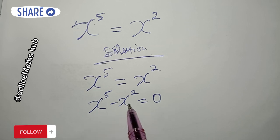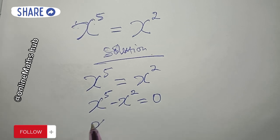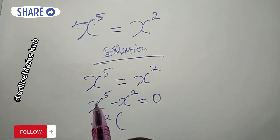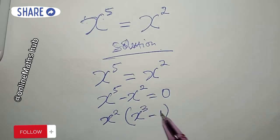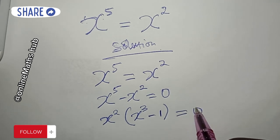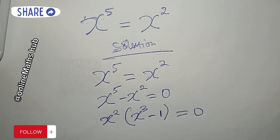Next, you can see that x power 2 is common, so I'm going to pull it out. Pulling out x power 2 leaves x power 3 inside the bracket, because factorizing x power 2 from x power 2 leaves 1.